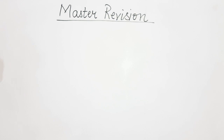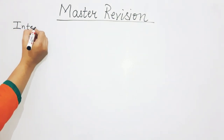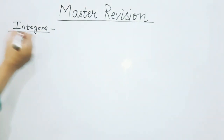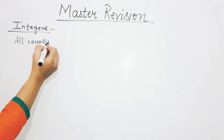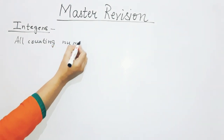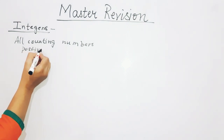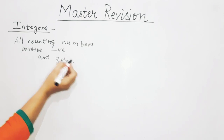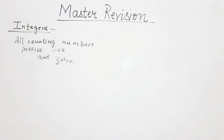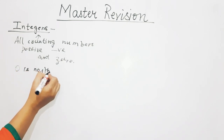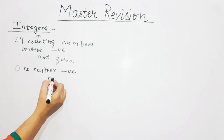Two chapters are coming: integers and fractions. I have already taken up the revision for integers, but I am explaining once again. Integers are all the counting numbers — positive counting numbers and 0 — along with the negatives of the counting numbers. These all comprise integers. Now, 0 is the only integer which is neither negative nor positive.